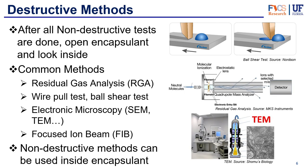Other destructive methods include the wire pull test or the ball shear test — they push and pull until the package fails, showing how resistant and resilient it is. You can also use electron microscopy such as scanning electron microscopy (SEM) or transmission electron microscopy (TEM), both providing detailed images. There is also focused ion beam, or FIB. Once you've broken into the package, you can perform non-destructive methods again on the inside, but you must always perform them on the outside first.